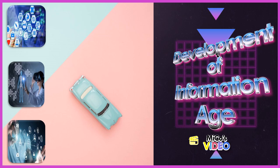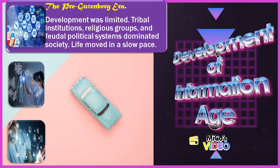Now let us move on to the development of the information age. First is the pre-Gutenberg era. Prior to the invention of the printing press, information was disseminated in a laborious and difficult manner. Time was greatly consumed. Books were read comprehensively. Tablets were available but information was not accessible to all groups of people, but rather only to a small elite group. Transmission of knowledge relied purely on word-of-mouth channels. The prevalent form of information was therefore the story of others. Development was limited. Tribal institutions, religious groups, and feudal political systems dominated society. Life moved at a slow pace.